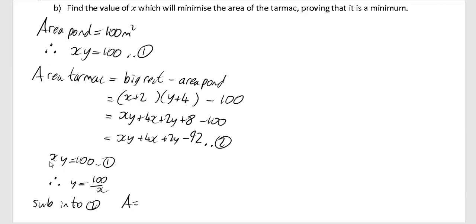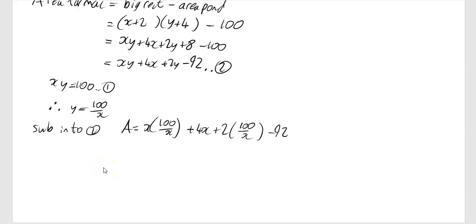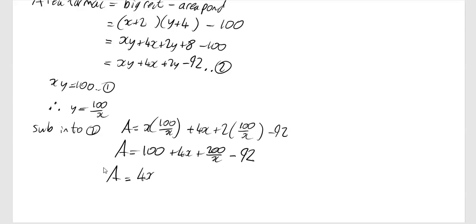Equation 2 becomes: A equals x times (100/x) plus 4x plus 2 times (100/x) minus 92. Simplifying: x times 100/x is just 100, then plus 4x, then 2 times 100/x is 200/x, minus 92. Tidying up: A equals 4x plus 200/x plus 8. That proves the required expression.